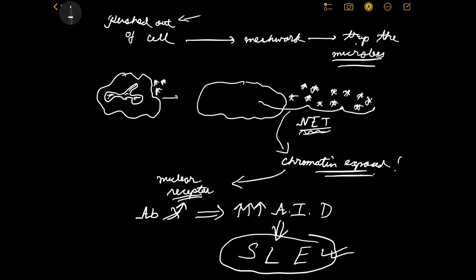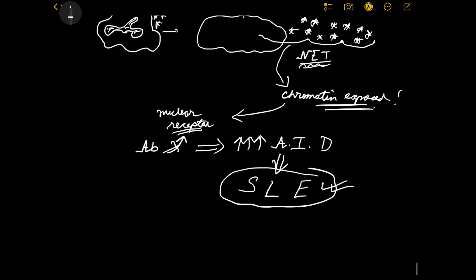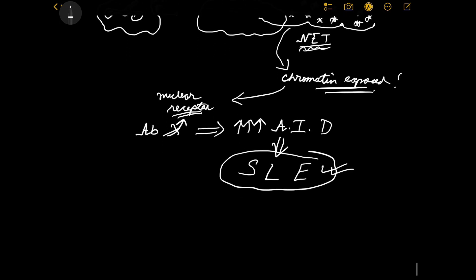In sepsis, throughout the body there is infection — it's not just a local infection, it has spread throughout the blood. Our body cannot keep up and is now desperate to rid itself of these microbes. Throughout the body, inflammation is going on — that is sepsis. So the body has to take a drastic step, and obviously we have to pay the price for this — there is an increased chance of autoimmune disorder.